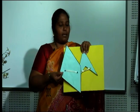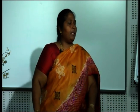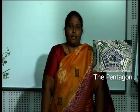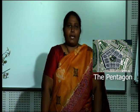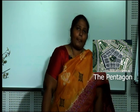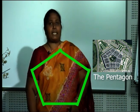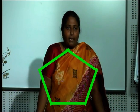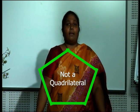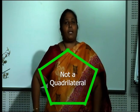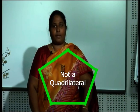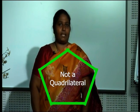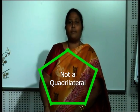Did you understand the difference between a concave and a convex quadrilateral? Now, there are a few more figures you can call quadrilaterals. You must have seen the Pentagon in the US in the news. What is the shape of a pentagon? It has five sides. Can you call that a quadrilateral? No — because a quadrilateral is a simple, closed, four-sided figure, and a pentagon has five sides. So a pentagon cannot be accepted as a quadrilateral.